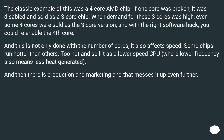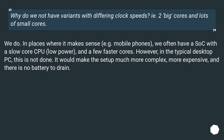And then there is production and marketing, and that messes it up even further. Why do we not have variants with differing clock speeds — for example, two big cores and lots of small cores? We do, in places where it makes sense. For example in mobile phones, we often have a SoC with a slow-core CPU for low power and a few faster cores. However, in the typical desktop PC this is not done — it would make the setup much more complex, more expensive, and there is no battery to drain.